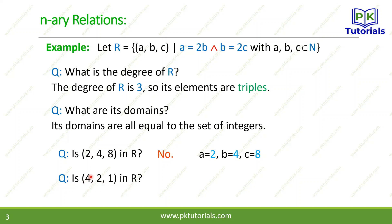There is another check for (4, 2, 1) in R. We have a = 4, b = 2, c = 1. Checking condition b = 2c: 2 × 1 = 2, yes. Checking condition a = 2b: 2 × 2 = 4, yes. Both conditions are true, so (4, 2, 1) is in R. This is our first example.